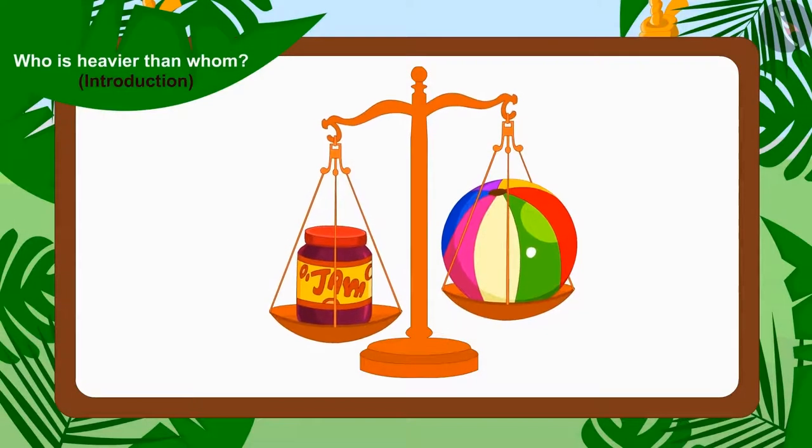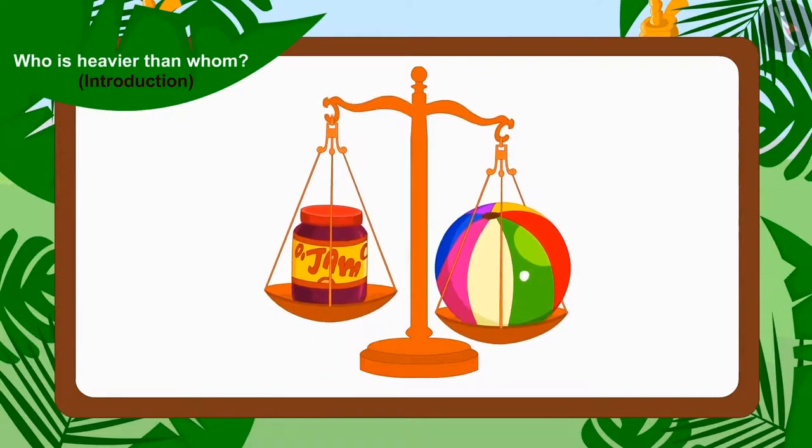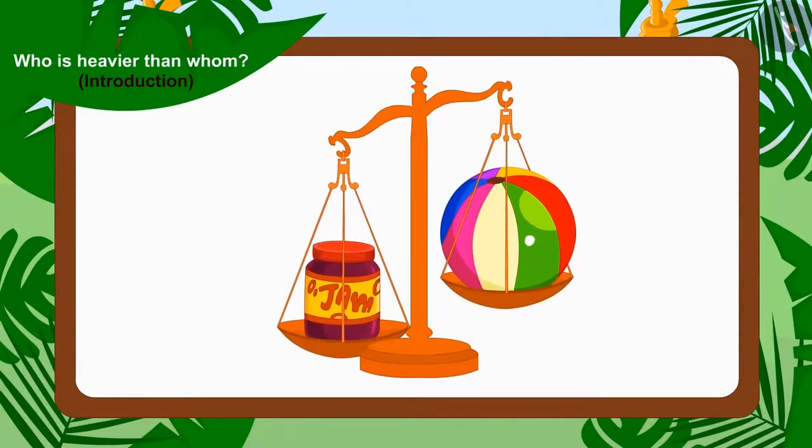The weighing scale will tip towards the side of the plate which has more weight on it.